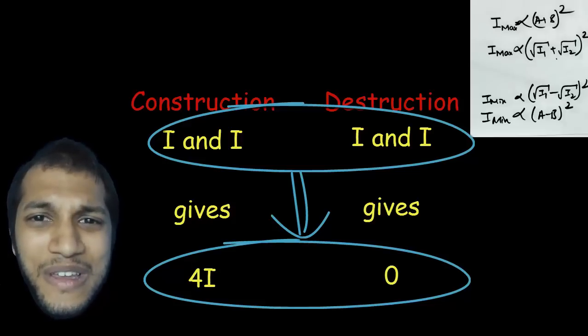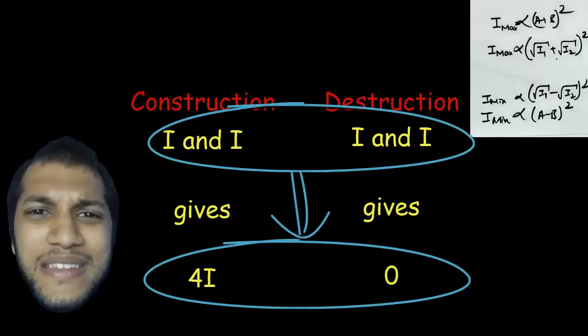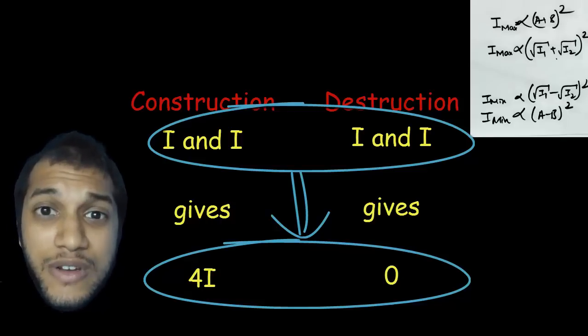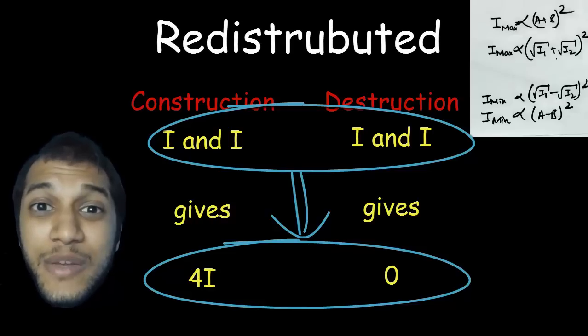Isn't that wonderful? I mean, that is amazing. So what we see is that in interference, energy is not created at construction and not destroyed at destruction. But what is happening is that the energy is being redistributed.